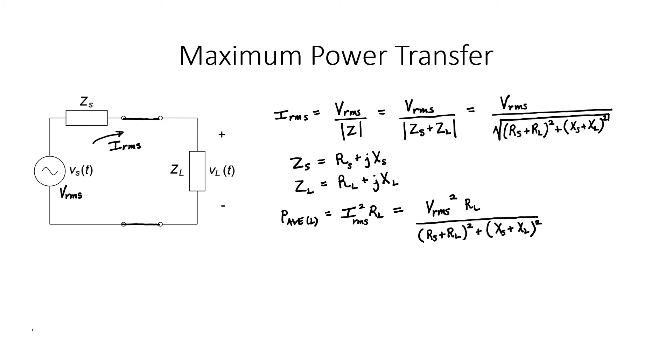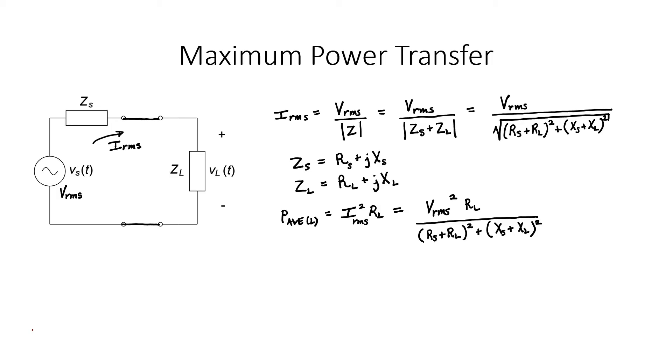If we stare at this equation for a moment and in particular look at the denominator, we can ask ourselves the following question: What should happen to the denominator if we want this power to be maximum? Well, the power will increase as the denominator gets lower. So we want the denominator to be a very small number. Power is maximized when the denominator reaches zero, but it's impossible for the denominator to reach zero, given that the source resistance is probably fixed and the load resistor has to be a number larger than zero.